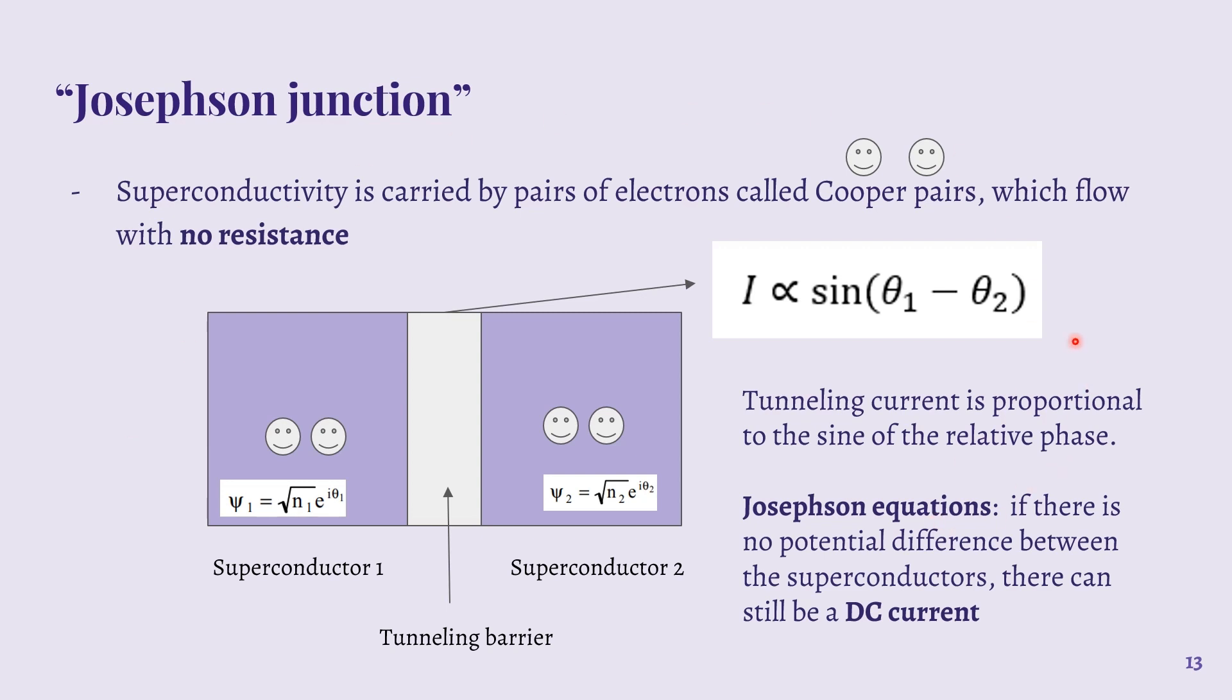What Josephson showed through deriving some equations is that the tunneling current through the barrier is proportional to the sine of the relative quantum phase of the two Cooper pairs. How he derived that is kind of beyond the scope of this presentation. But what he also showed with the same equations is that if there is no potential difference between the two superconductors, there can still be a DC current through. And this is known as the DC Josephson current, which is the DC Josephson effect and is what Gieber actually observed.